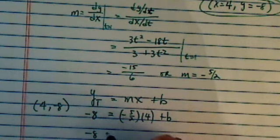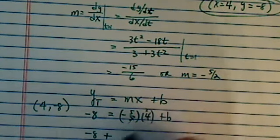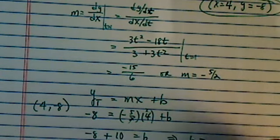So minus 8, this one is going to be plus 10 is equal to b, so I have b equal to 2.